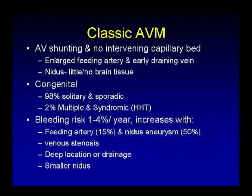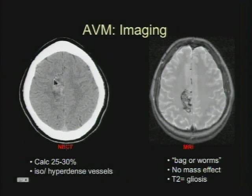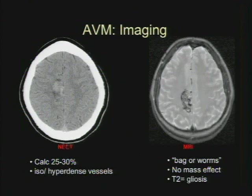The classic AVM has AV shunting and no intervening capillary bed — the nidus itself has little to no brain tissue. These are usually sporadic and solitary, but 2% are multiple and syndromic, such as Osler-Weber-Rendu (hereditary hemorrhagic telangiectasias). Increased bleeding risk is suggested by feeding artery or nidal aneurysms, venous outflow stenosis, deep location, deep venous drainage, and a smaller nidus. On CT, you may see calcification in 25-30%, with isodense or hyperdense vessels. On MRI, the bag-of-worms appearance — you don't usually see surrounding T2 or mass effect, but you can see surrounding T2 from gliosis.